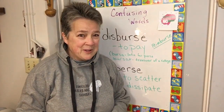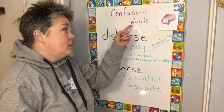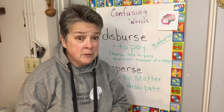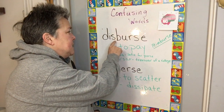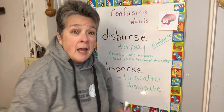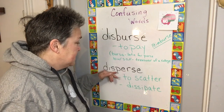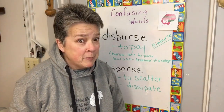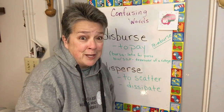Welcome to another edition of English Makes No Sense. Today we're going to take a look at confusing words, and the two words that are often confused are disburse, D-I-S-B-U-R-S-E, and disperse, D-I-S-P-E-R-S-E. They're kind of homophones, they're kind of confusing. Let's go take a look.